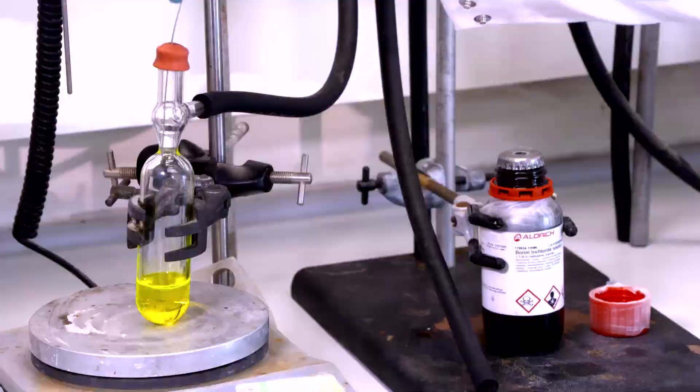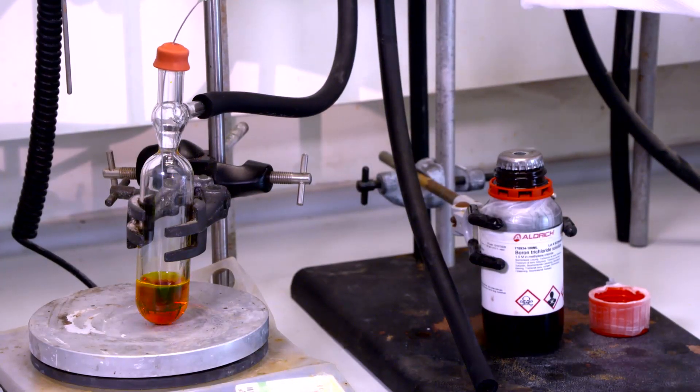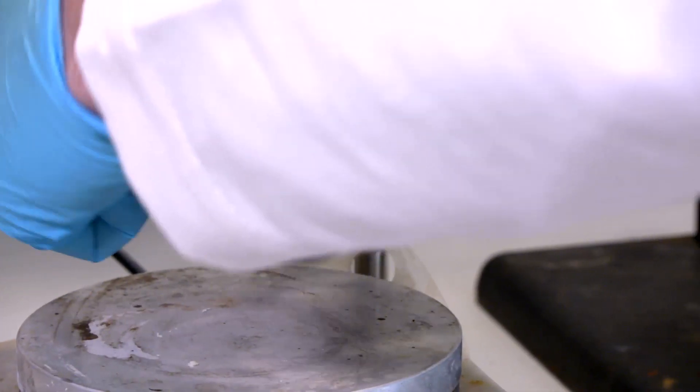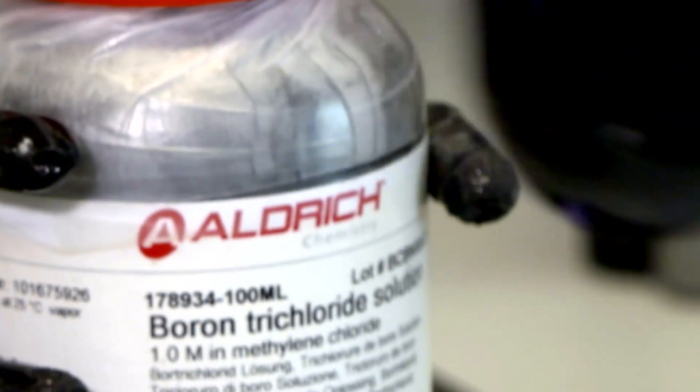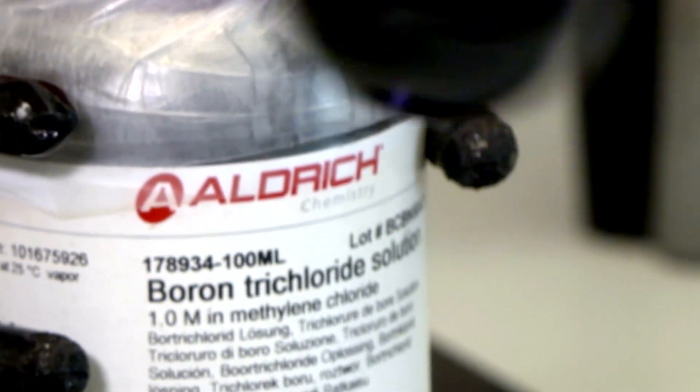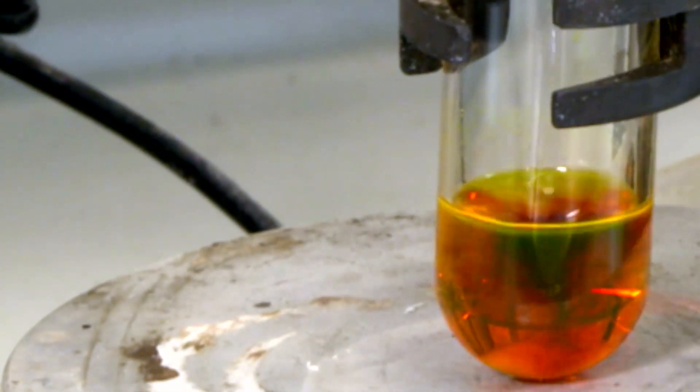You can actually make them to be either useful synthetic intermediates for synthesis, or you can make them to have desirable properties in their own right that you can then apply in a range of applications. By adding a simple commercial reagent, boron trichloride, to a compound, we do a chemical transformation that changes the energy of the light it absorbs and the color of the light it emits.